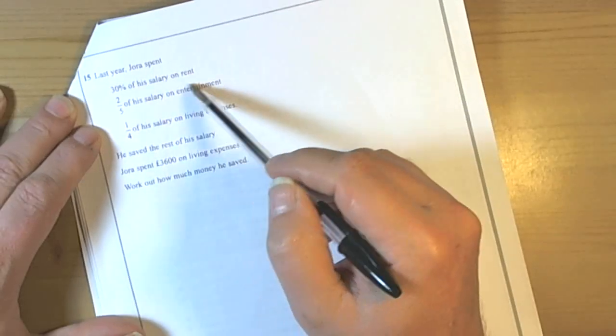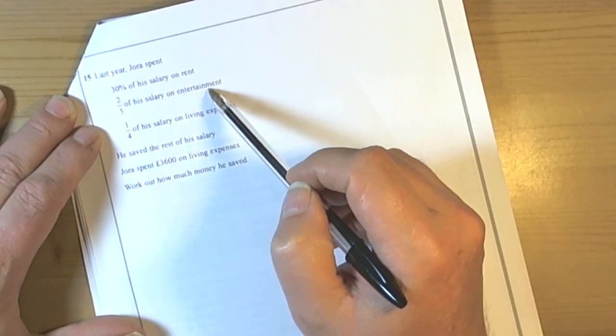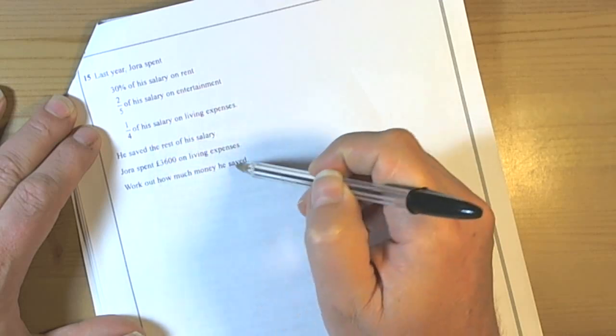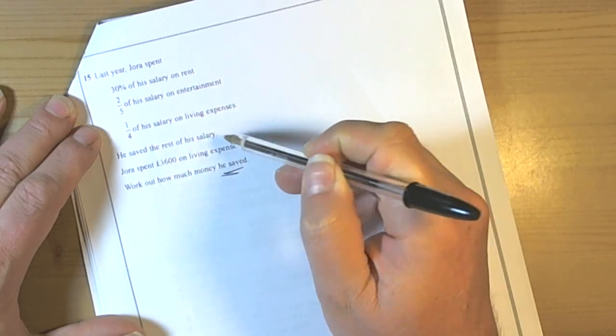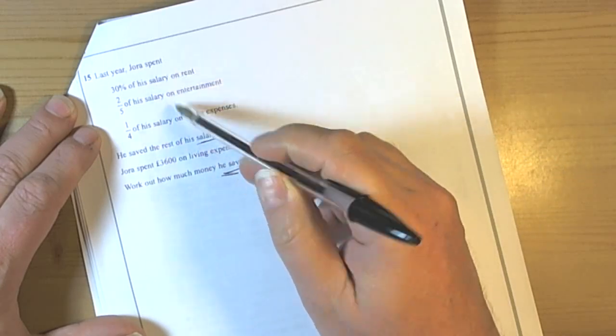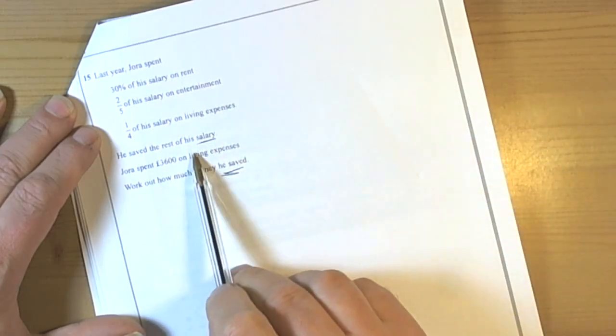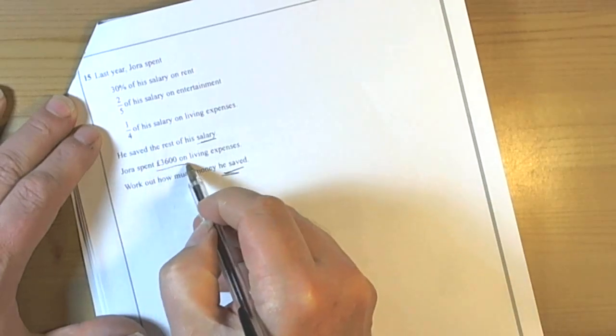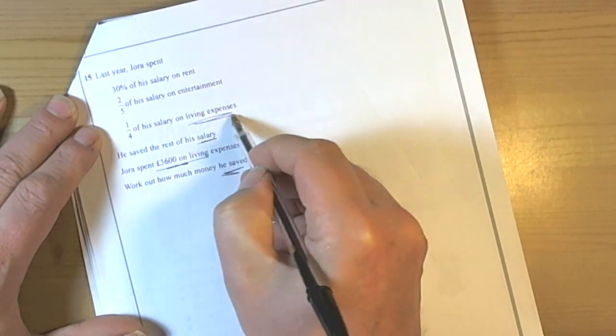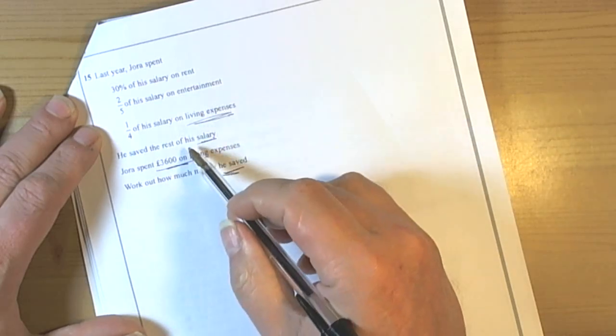Last year Jura spent 30% on rent, 2 fifths on entertainment, and 1 quarter on living expenses. Work out how much money he saved. So it's talking about his salary, so we really need to know what his salary was. So let's have a look. We've got some information here: £3,600 on living expenses, and a quarter of his salary was living expenses.